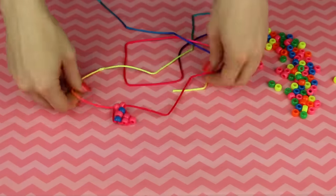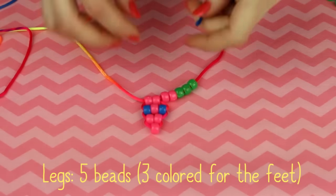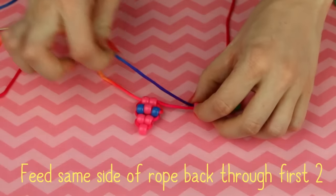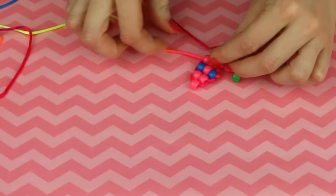And then we move on to the legs. You need five beads, three colored for the feet, and you're gonna feed that same side of the rope back through those first two and pull it tight. The end will loop around making the cute little lizard foot.